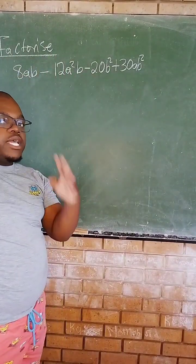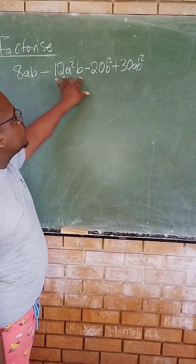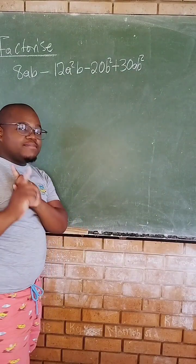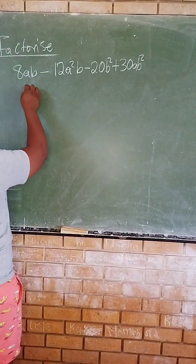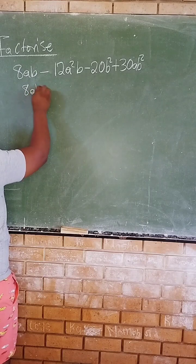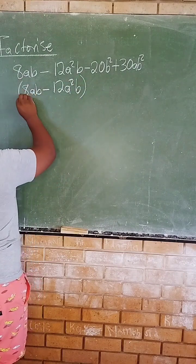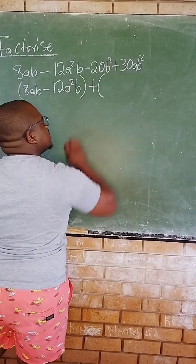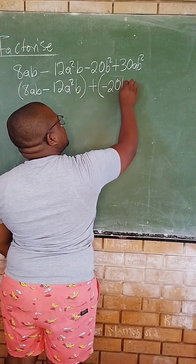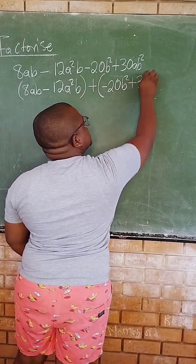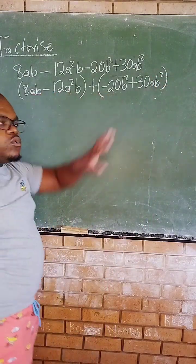We are factoring by grouping. How do we know it's factoring by grouping? Because it has four terms: one, two, three, and four. Since it has four terms, we know it is by grouping. Now we have to group: we'll have 8ab minus 12ab, and then we have negative 20b squared plus 30ab squared.